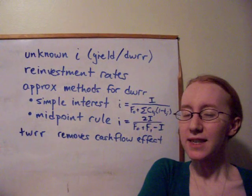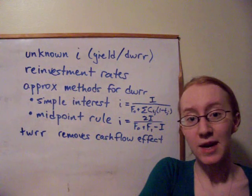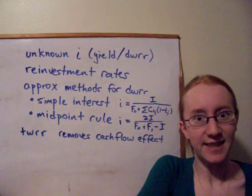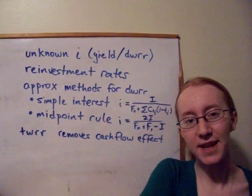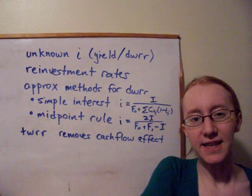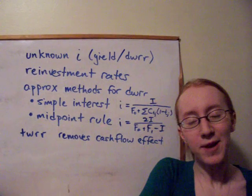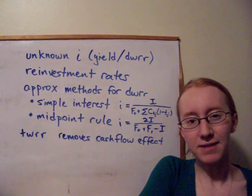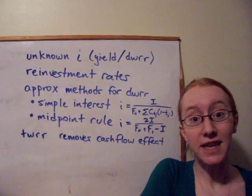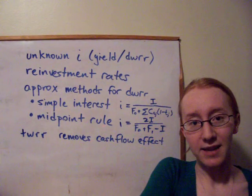But if we're really interested in measuring how the fund performed, regardless of the decisions that investors might have made, getting scared and taking out their money at the wrong time, that sort of thing, we want to look at the rates independent of those cash flows. So with time-weighted rate of return, we just get an individual rate for how the money grows over each period in between the cash flows.